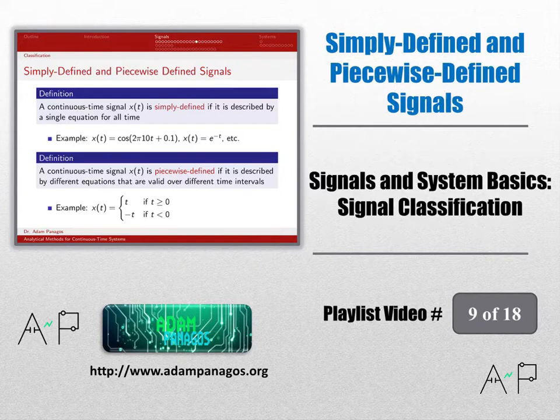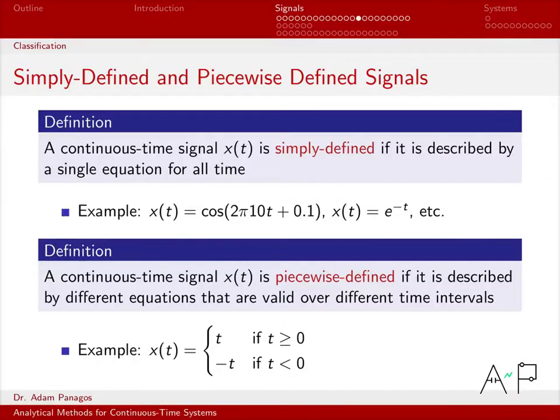The next type of signal classification we want to examine is what we mean by a simply defined signal and a piecewise defined signal. This is probably one of the simplest definitions in this whole sequence of videos. Almost doesn't need a video all by itself, but it's worth stepping through just briefly.